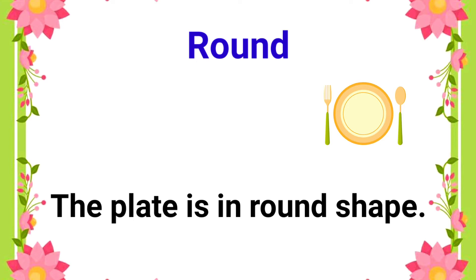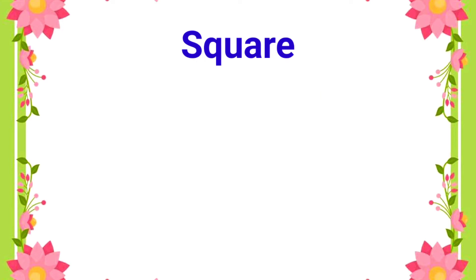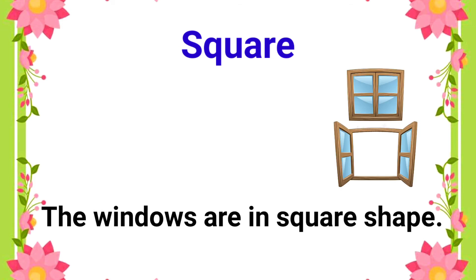Then, look at the next describing word, square. Square. Here, we need to make a sentence using the describing word, square. The sentence is, the windows are in square shape.